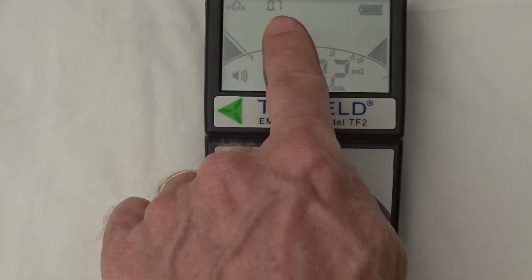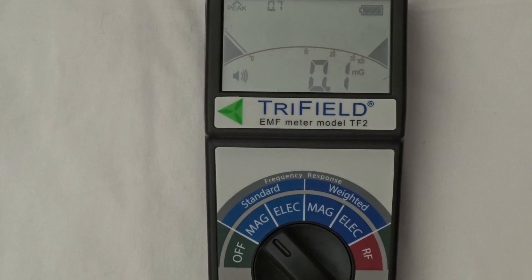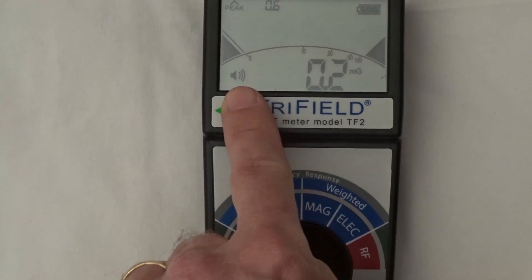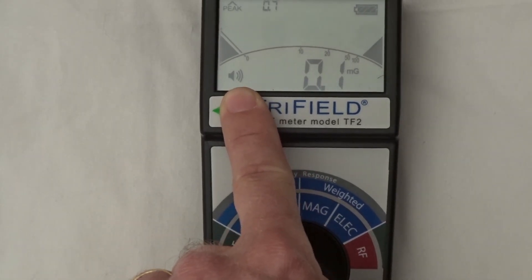At the top left we've got the peak measurement unit. This captures the highest peak in mini Gauss that's been measured and holds it for 3 seconds. And the icon at the bottom left tells us we've got the audio function switched on.